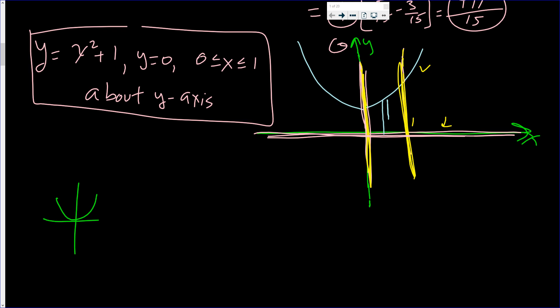We want to rotate about the y-axis, which means the slabs go parallel to the y-axis — we're using the shell method. The volume is 2π times r times h times dx. The slabs go from x = 0 to x = 1.